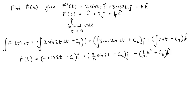The problem is we still have yet to determine the constants of integration: C1 for the x component, C2 for the y component, and C3 for the z component. This is where the initial value comes in. The initial value says that our vector function evaluated when t is equal to 0 has an x component of 1, a y component of 2, and a z component of 1 half.